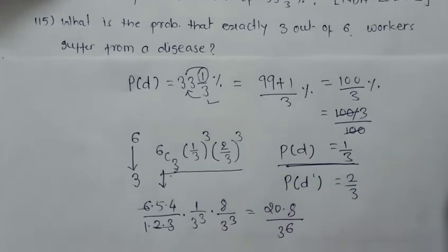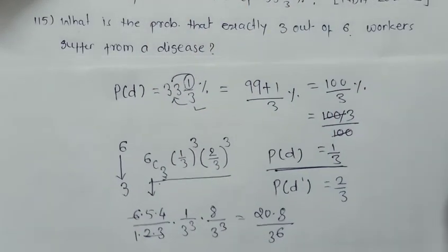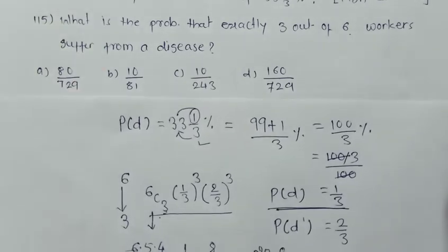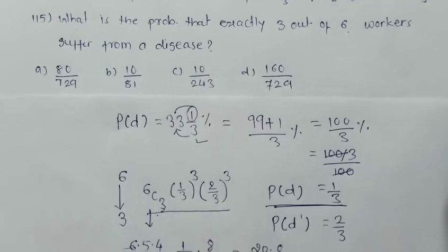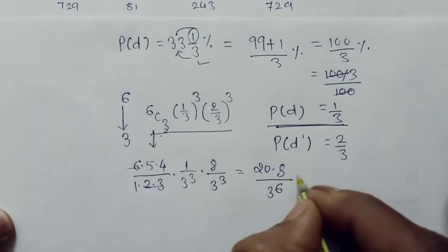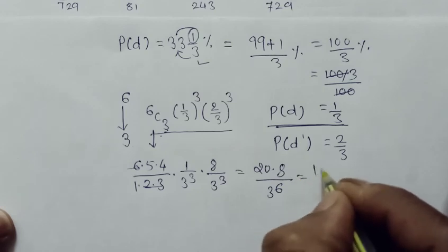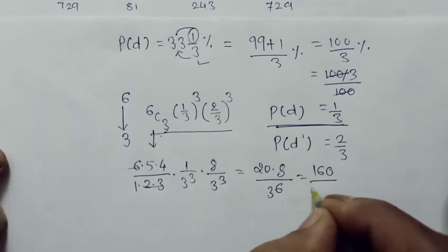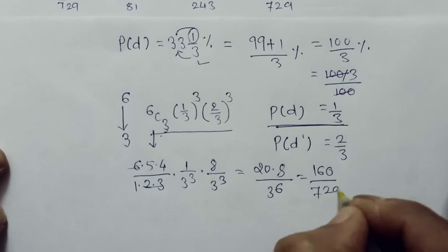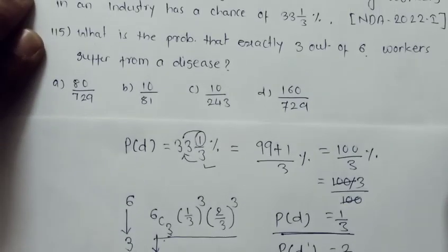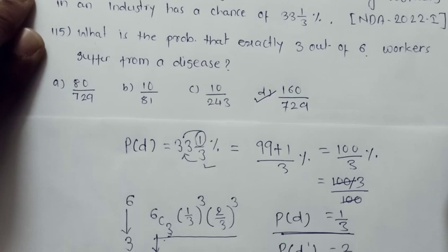So 20 × 8 = 160, and 3 to the power 6 is 729, giving the answer 160/729. The correct answer is option D.